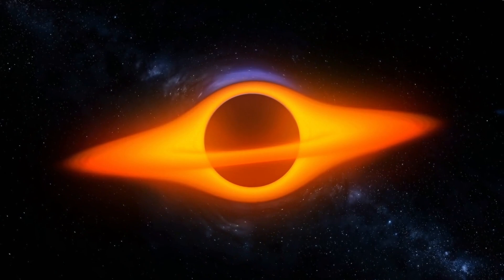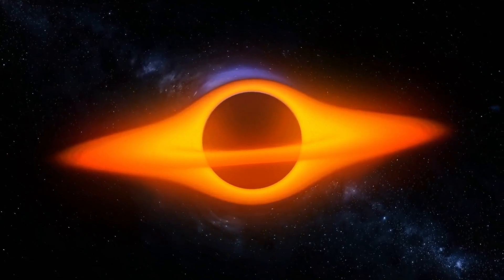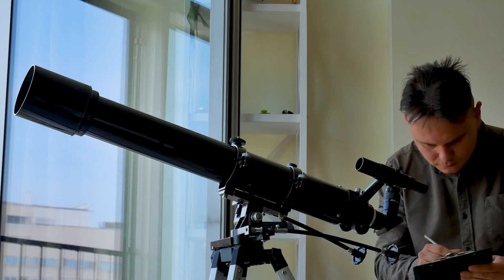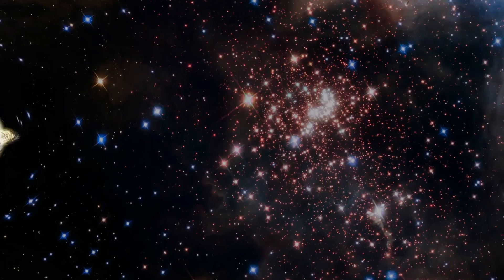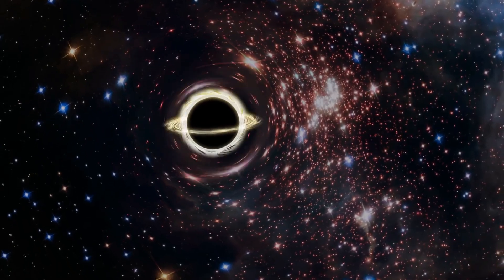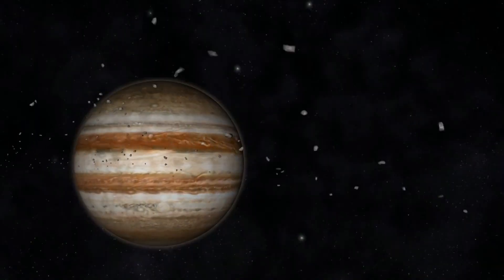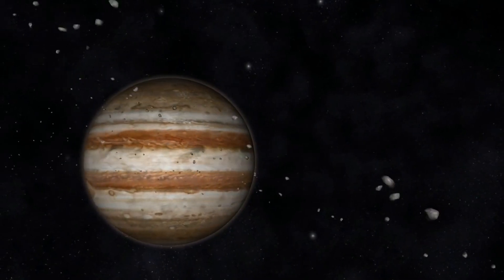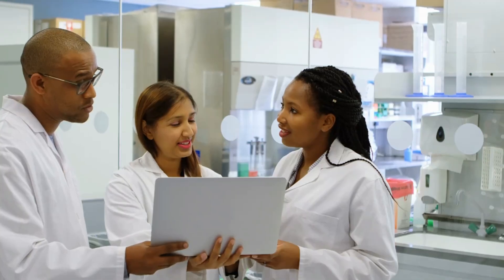Black holes do not interact with light in the same way as normal objects, making them invisible in the optical spectrum. This means we cannot simply point a telescope at the sky and expect to see a black hole. Instead, we must look for indirect effects, such as gravitational impact on other objects. Detecting these effects requires precise observations and detailed analysis of orbital movements in the solar system.